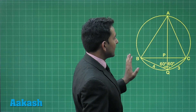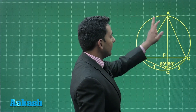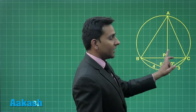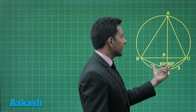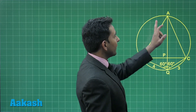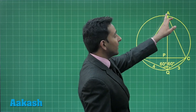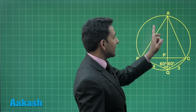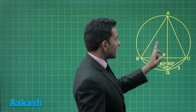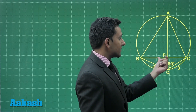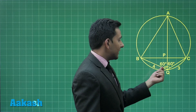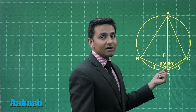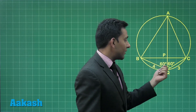Here we can see that we have an equilateral triangle ABC which is circumscribed by a circle. We are drawing a line segment from vertex A, passing through the opposite side at point P, and then it intersects the circumcircle at point Q.